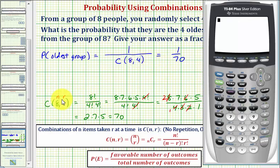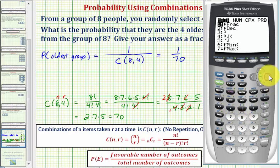So first to check our combination here, we enter eight, math, right arrow to probability. Notice option three is for combination. So we press three. Now we enter r, which is four, and then enter. So this verifies we evaluated the combination correctly.